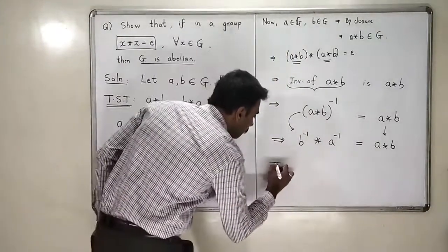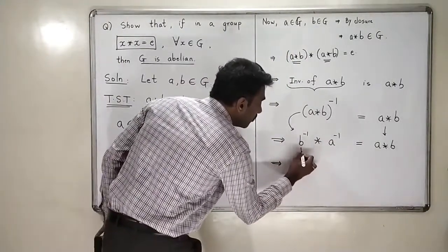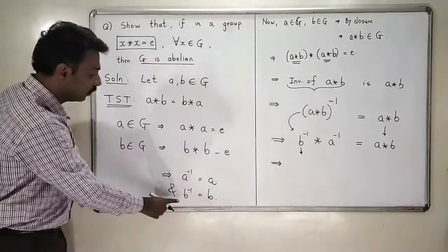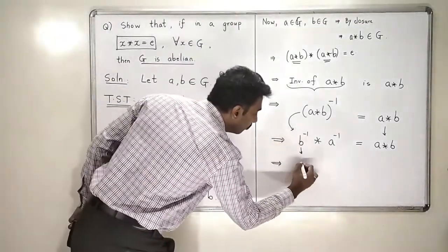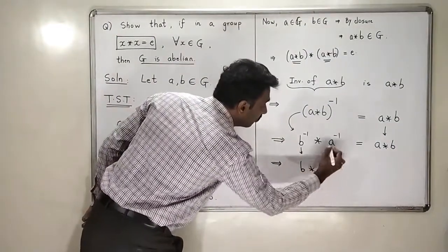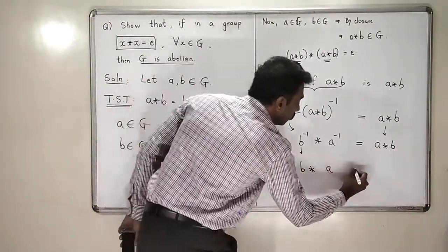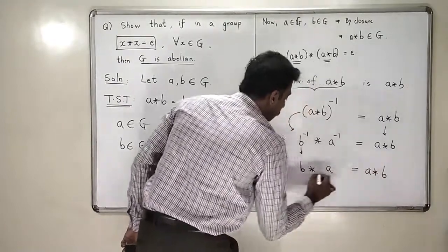So, now, can I replace this b inverse by something? Yes. I know that b inverse is b, and a inverse is a. So this b inverse is b star a inverse is a, which is equal to a star b. See, did we reach the conclusion that we wanted to reach?